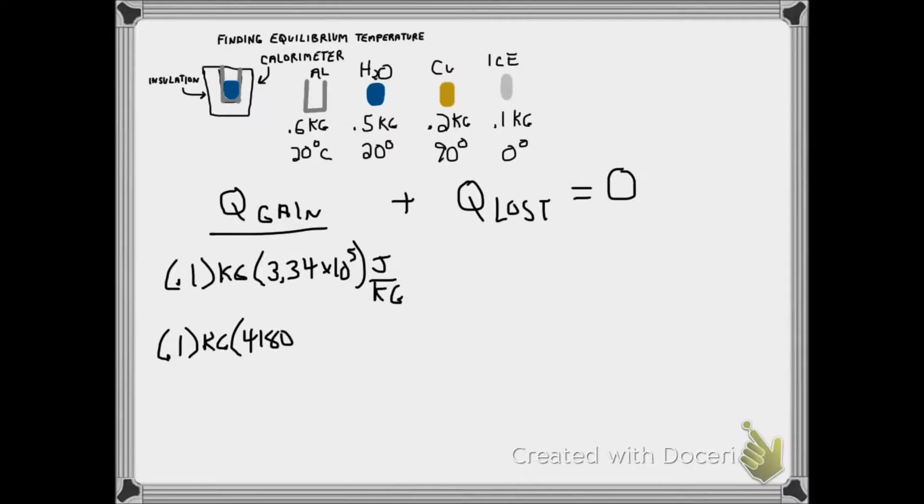Once that is melted, we have to heat that. It's 0.1 kilograms times the specific heat of water. We don't know the final temperature, we'll call that T sub f, but we know it started at 0. So our change in temp is T sub f minus 0.